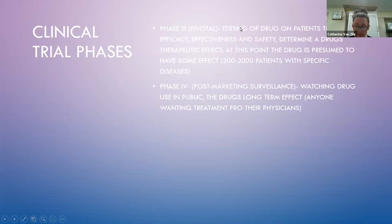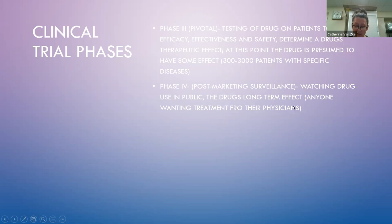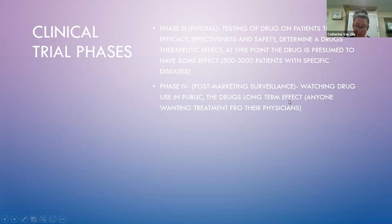Phase three, or pivotal, is the testing of the drug on patients to assess efficacy, effectiveness, and safety, and it determines a drug's therapeutic effect. At this point, the drug is presumed to have some therapeutic effect, and about 300 to up to 3,000 patients with specific diseases are involved. This is also the point where patients will be randomized — assigned by chance to a treatment arm.